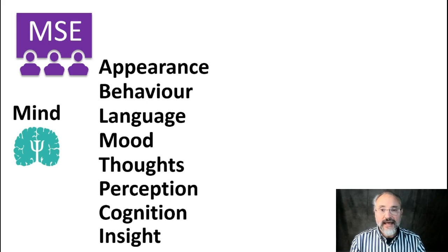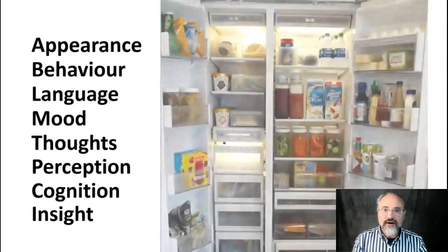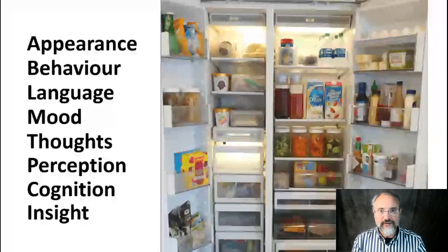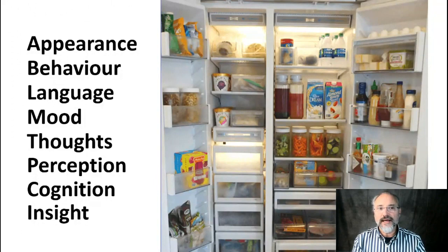The mind has many other functions, but these are the functions that traditionally we examine when we conduct a mental state examination. They act very much like the shelves in a fridge — we organise the information about somebody's mind around those headings. We are expected to put certain things in certain shelves, always in the same place, so that when we communicate, we are able to transfer information efficiently and quickly.